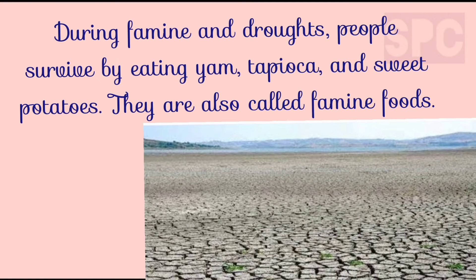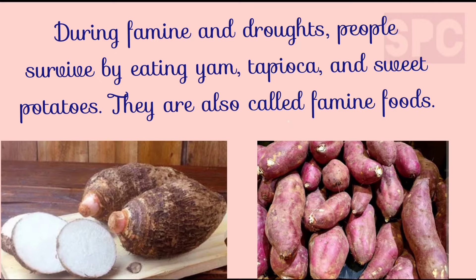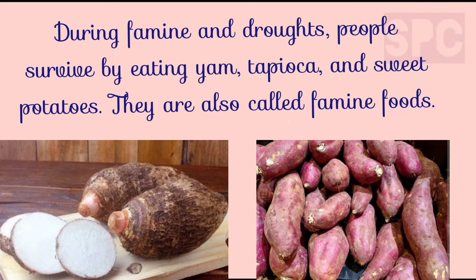Due to famine and droughts, there is not enough food for people to eat, which may be due to no rainfall, or flooding, or insect infestation, resulting in the destruction of crops. In such situations, people survive by eating yam, tapioca, and sweet potatoes. And so these plant products are also called famine foods.